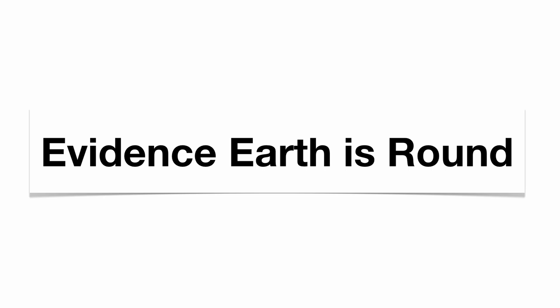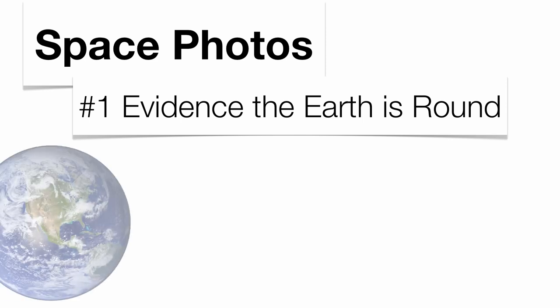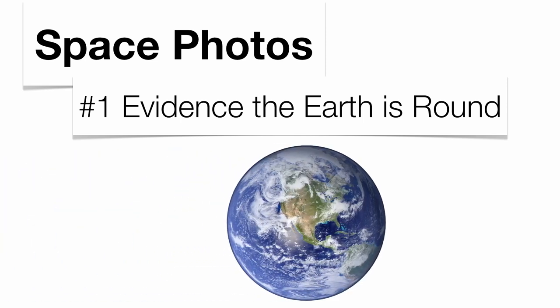The Earth wasn't always believed to be round. There was a significant period of time that a lot of people believed the Earth was flat. We do have some evidence that supports the idea that the Earth is not flat and that it actually has a spherical shape. The first piece of evidence is from space photos — from the Hubble Space Telescope, the Apollo missions — by far the number one evidence that the Earth is some sort of spherical shape.